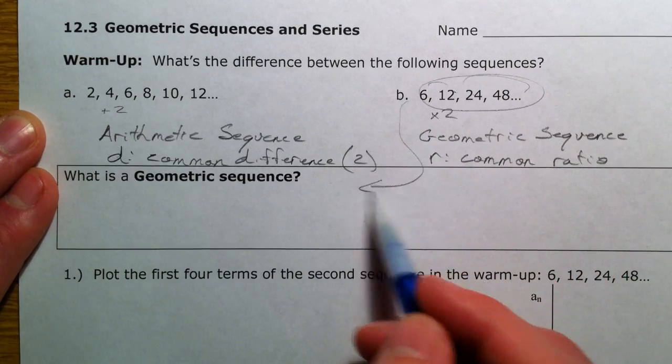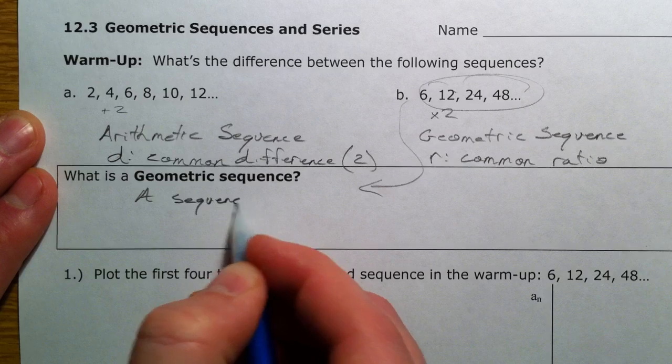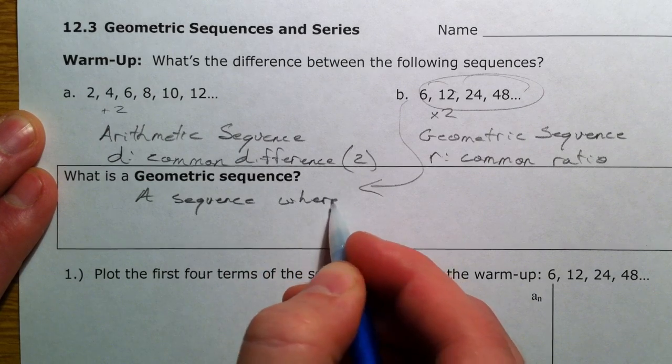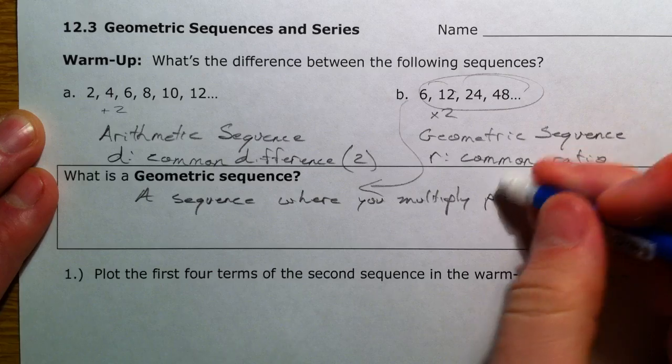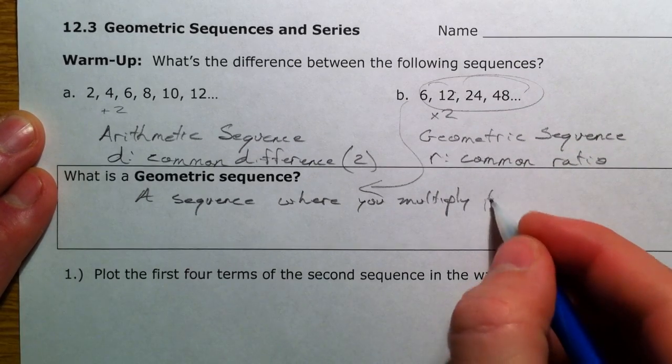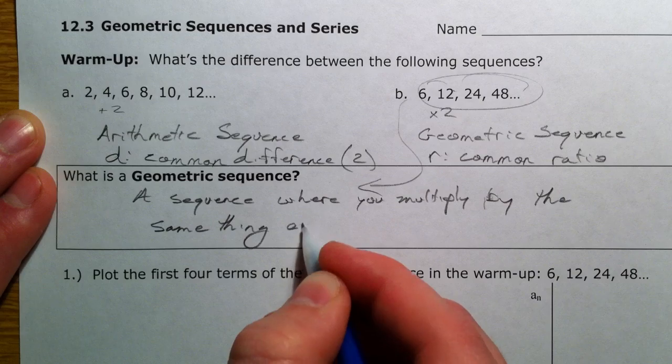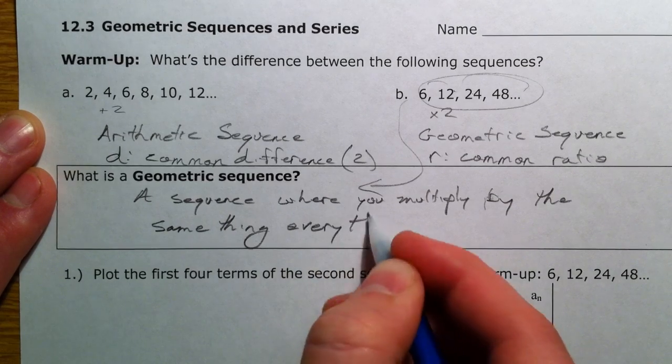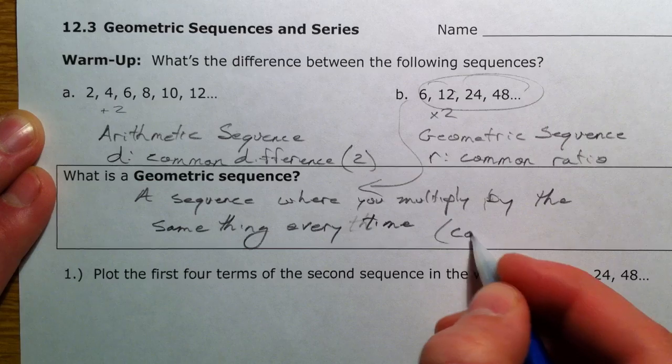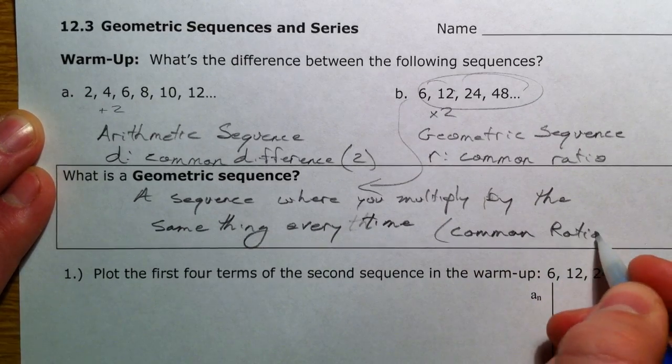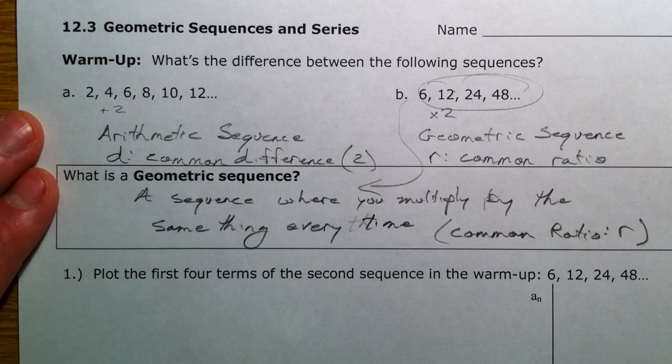So this is an example of a geometric sequence. A sequence where you multiply by the same thing every time. That's what we call a common ratio. And we're going to use the letter R. So common difference D for arithmetic, common ratio R for geometric.